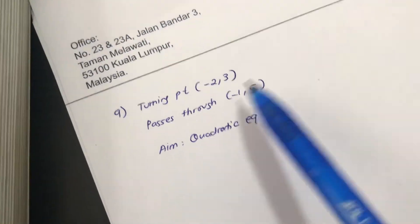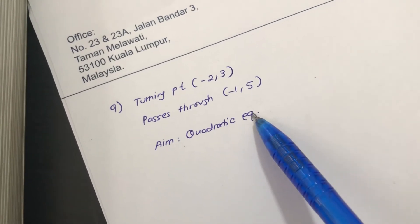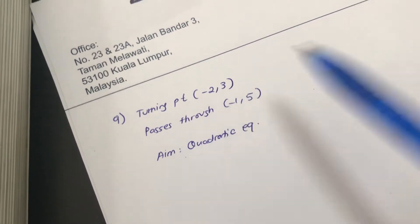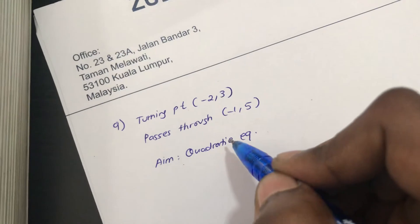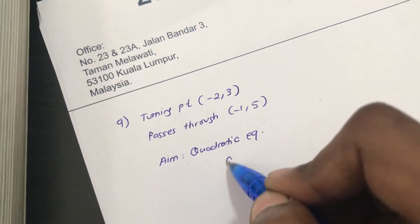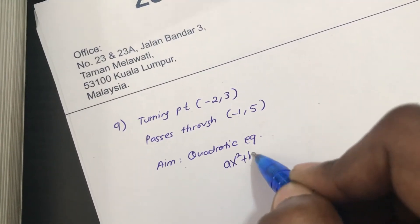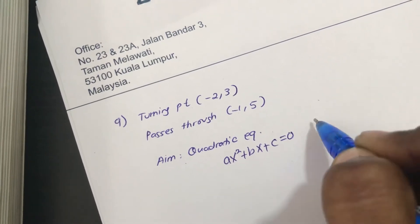So I have turning point, passes through, my aim is quadratic equation. Since you have the turning point, the form that you're interested in for the quadratic equation, instead of getting ax² + bx + c = 0, rather than getting this,